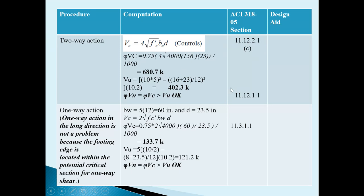For one-way action, same equations as used for the square footing apply. phi·Vc must be greater than Vu. In this case phi·Vc = 133.7 K and Vu = 121.2 K. We are performing this check only in one direction — the short direction.